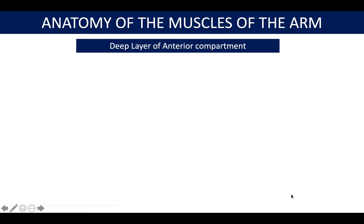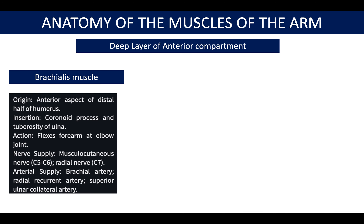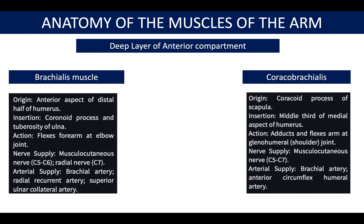The deep layer of the anterior compartment includes the brachialis muscle and the coracobrachialis muscle. The brachialis originates from the anterior aspect of the distal half of the humerus and inserts into the coronoid process and tuberosity of the ulna. It is supplied by both the musculocutaneous nerve and the radial nerve, and its arterial supply comes from the brachial artery, the ulnar collateral artery, and the radial recurrent artery.